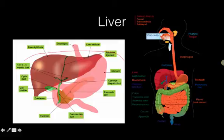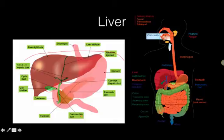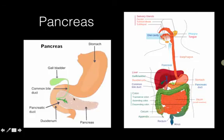Bile goes into your small intestine right at the beginning and breaks down fats into smaller pieces, making an emulsion. You've probably experienced washing dishes where hot water and a sponge can push grease around but not remove it — but as soon as you add dish soap, the fat seems to disappear. What's really happening is the fat is getting broken down into smaller pieces, and that's exactly what bile does to fat as it moves through.